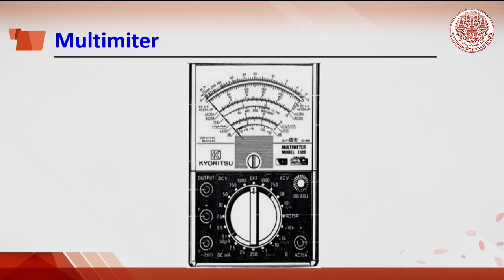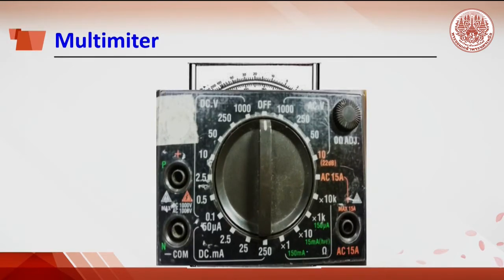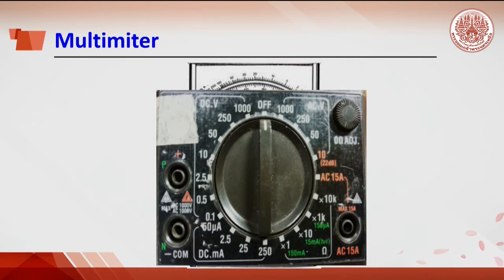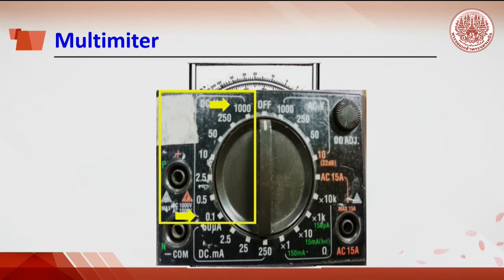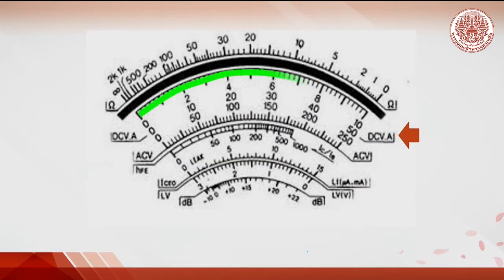Before measuring the electromotive force or EMF of the galvanic cell, students need to know how to read and use the multimeter. A multimeter is a device to measure electrical data like voltmeter, ammeter, and ohmmeter. From left to right, the bottom settings are for measuring current and resistance, while the top is used to measure AC voltage and DC voltage. In this experiment, DC voltage is used.